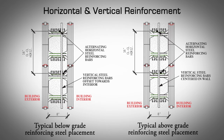The third course is placed in the same position as the first course. The fourth course is placed in the same position as the second. This staggered pattern of horizontal reinforcement is necessary to allow for the vertical reinforcement to be placed from the top and weave in between the horizontal steel bars.